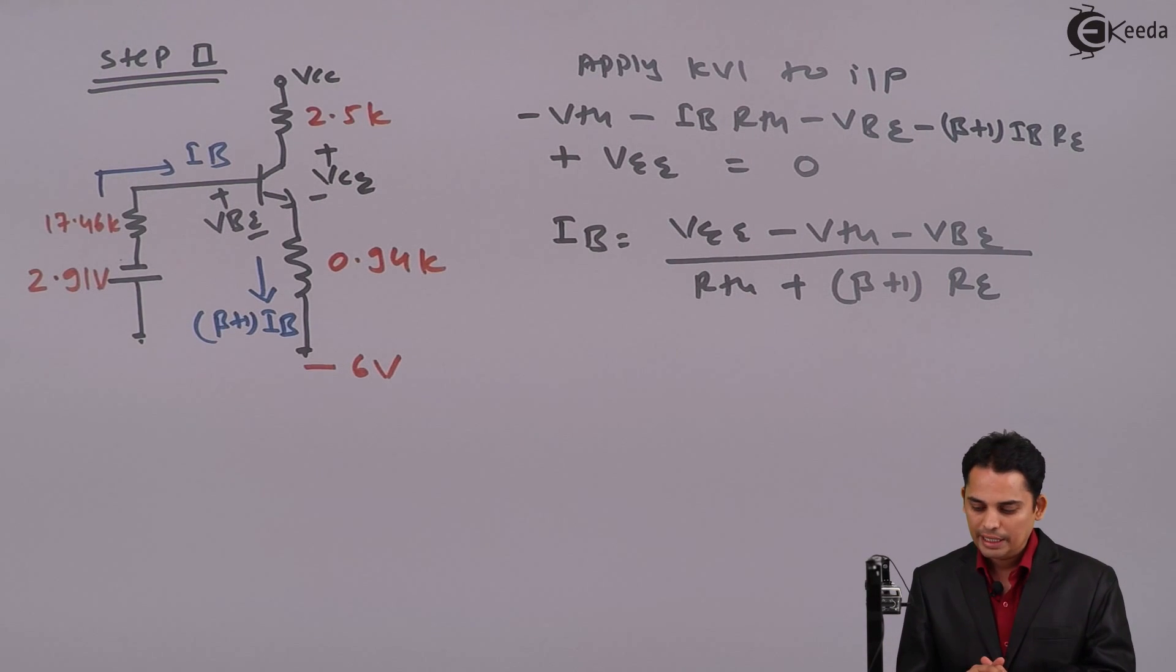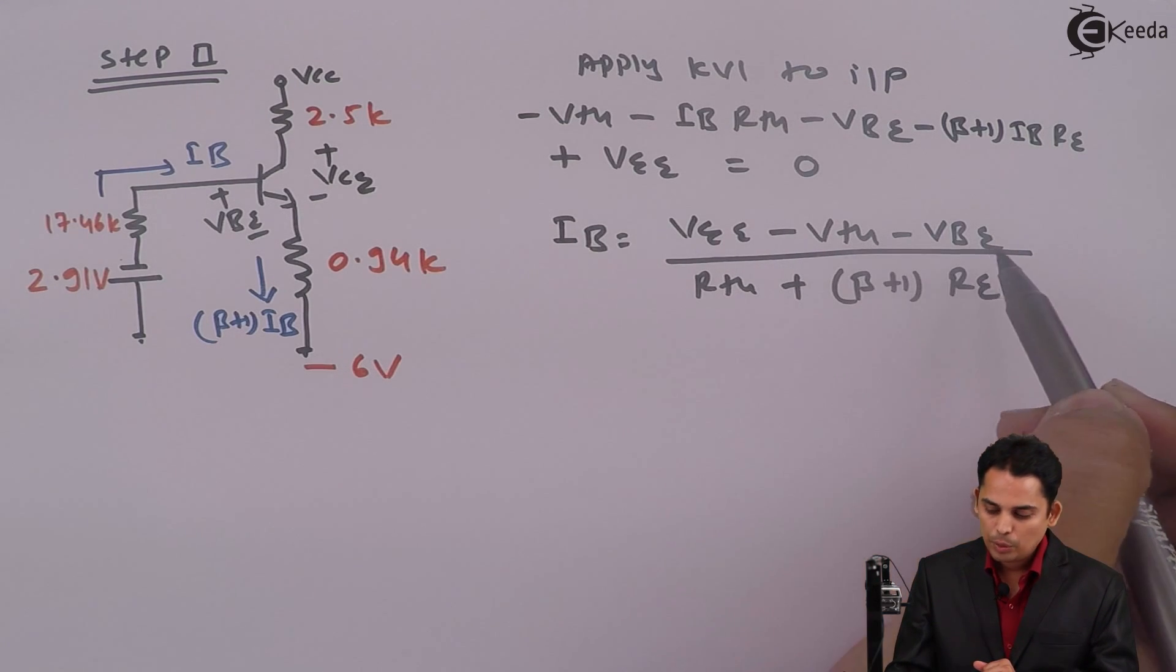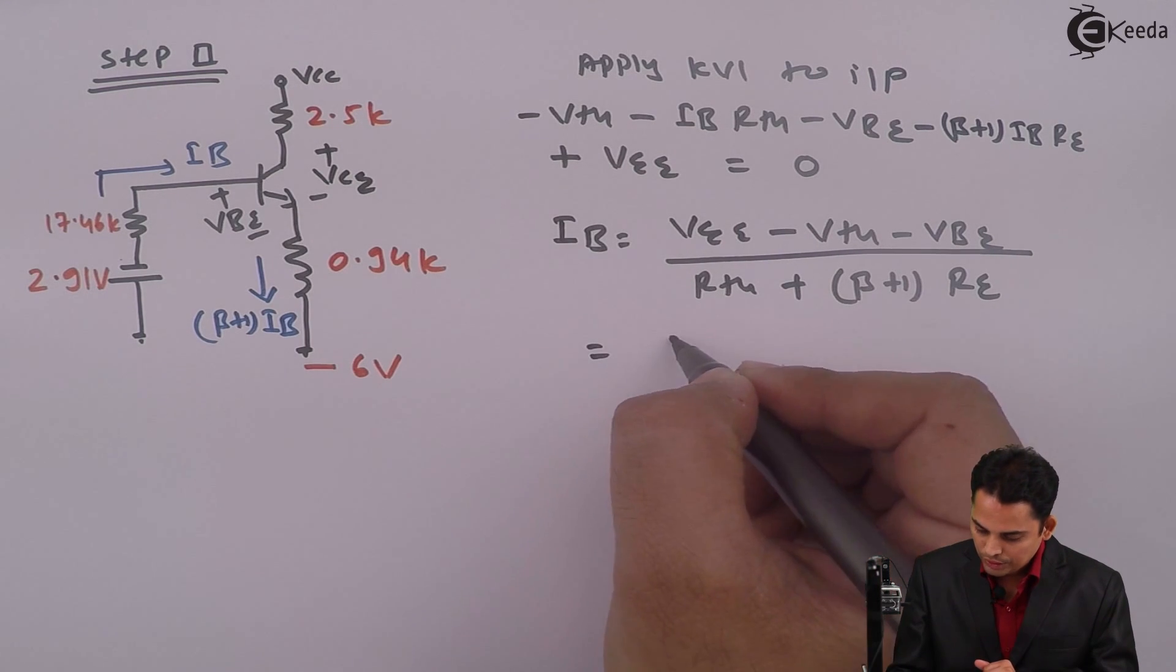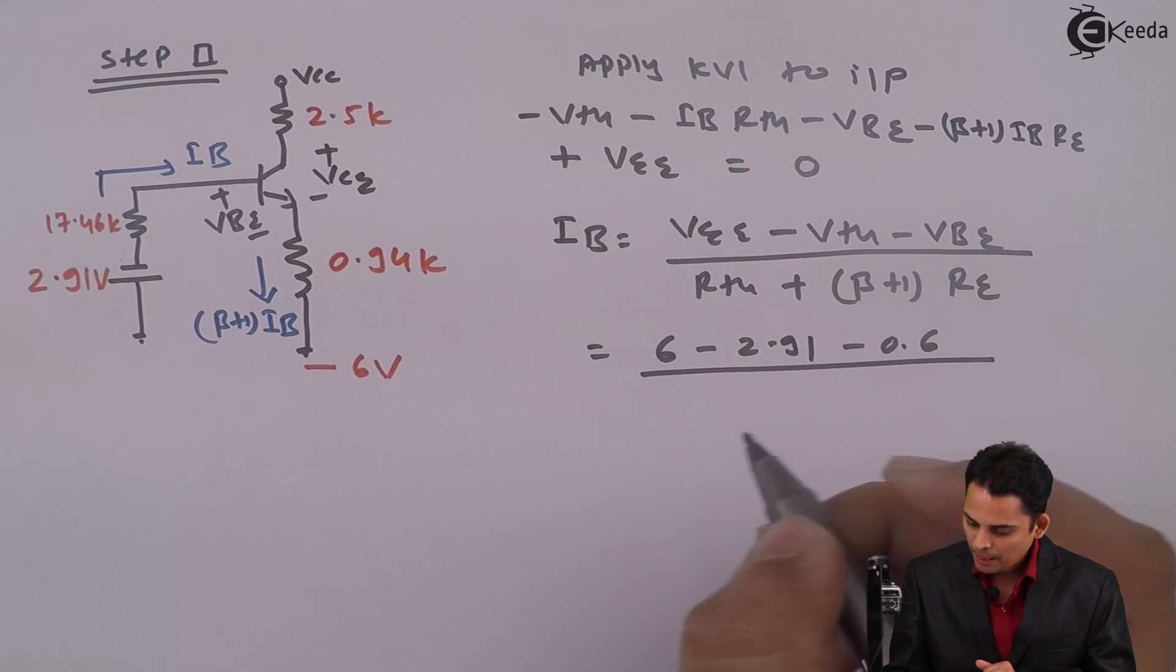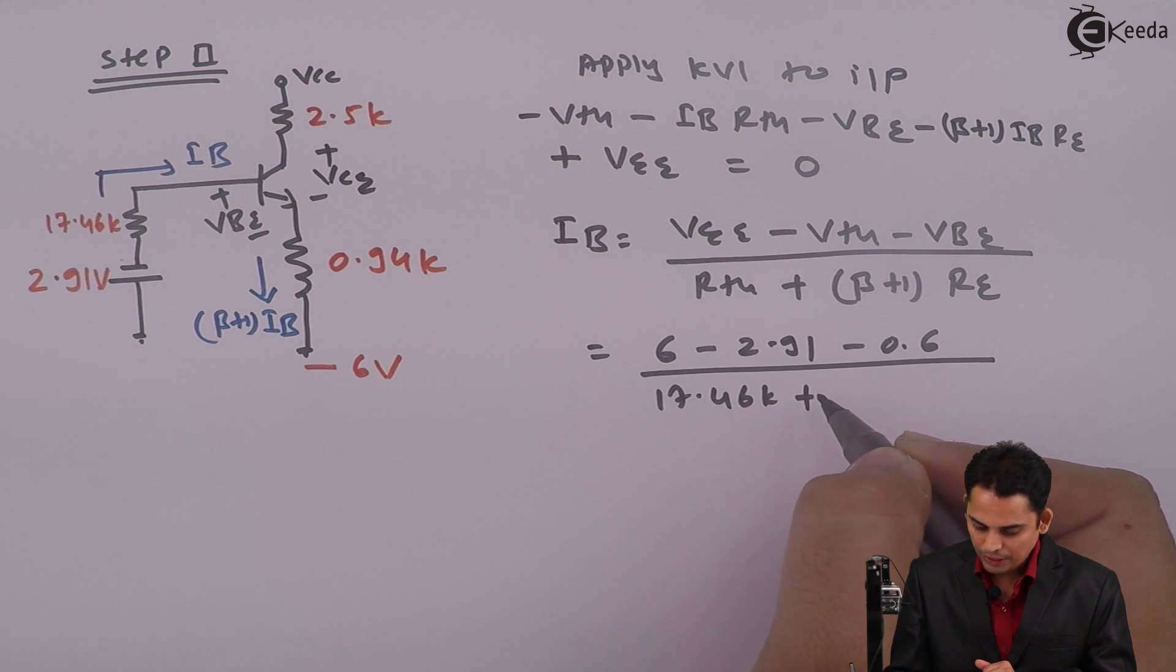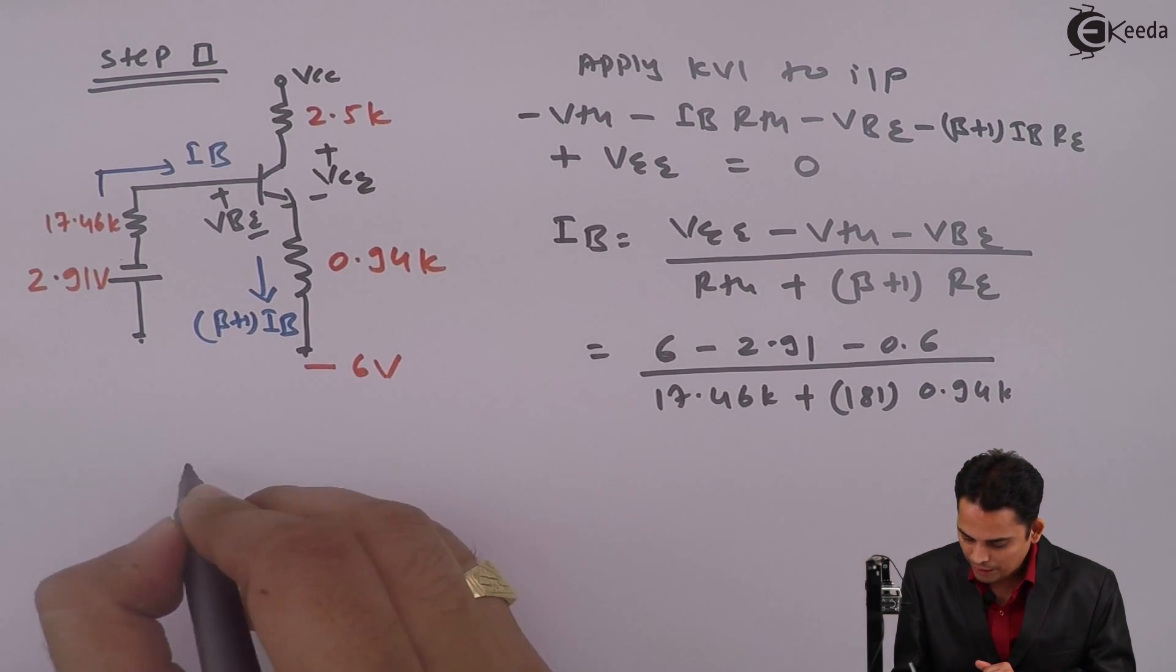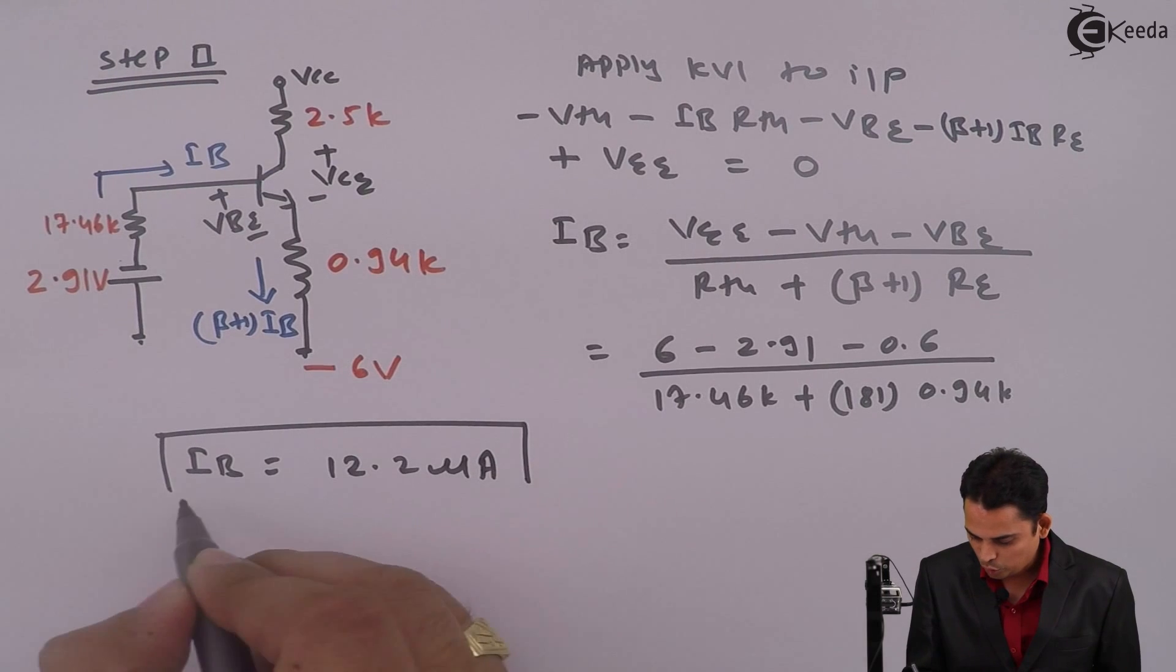In that particular case, the base current equation becomes VEE minus VTH minus VBE divided by RTH plus beta plus 1 times of RE. Now, substitute the values 6 volts minus 2.91 minus 0.6 divided by RTH is 17.46 kilo. Beta is 180. So beta plus 1 becomes 181 multiplied by 0.94 K. The value of base current is equal to 12.2 micro amperes.